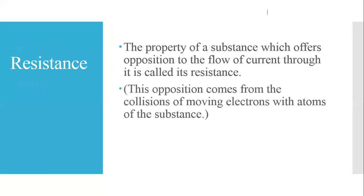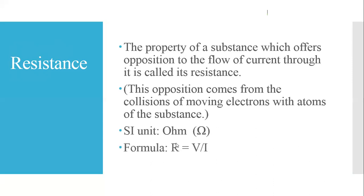The opposition comes from the collision of the moving electrons with the atoms of the substance. The SI unit of resistance is the Ohm, and the formula for resistance is R equals V upon I.